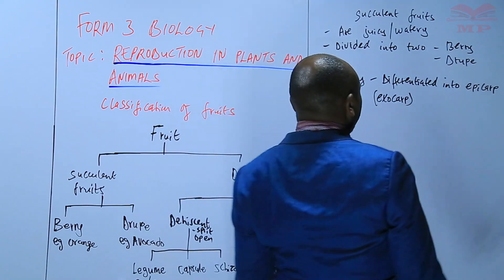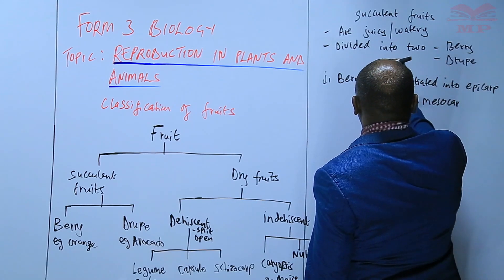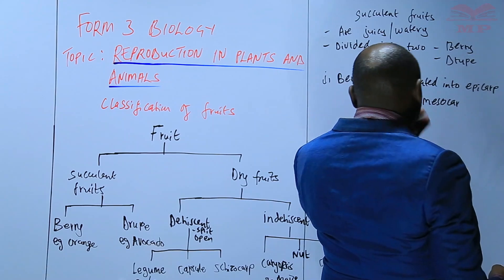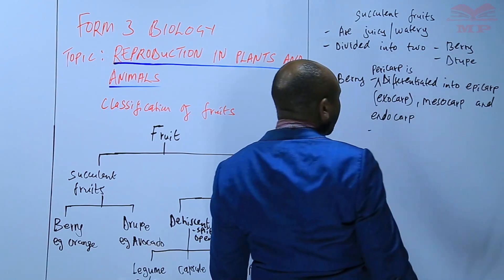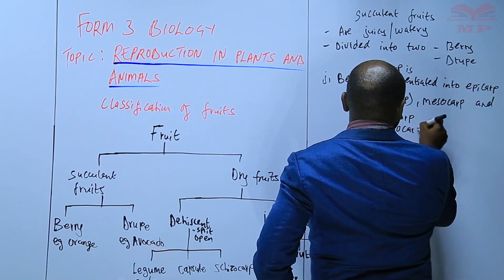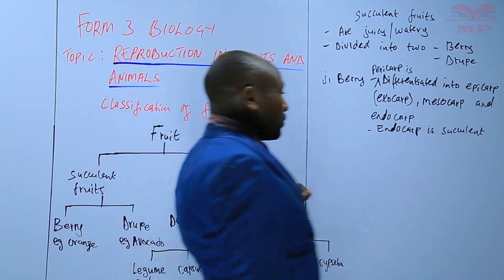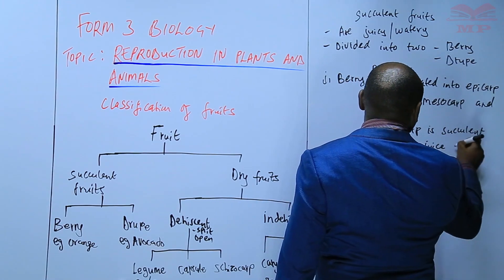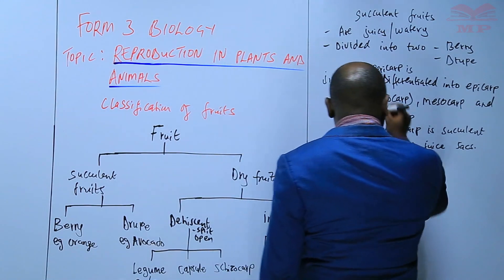The pericarp is differentiated into epicarp, mesocarp, and endocarp. That is one characteristic. The endocarp is succulent — the innermost part is soft, succulent, and contains juice sacs. So we will have a diagram to illustrate a berry. The outer layer is thin — that is what we are calling the epicarp. Then we have the middle layer, which we are calling the mesocarp. And then we have the innermost layer, which is the endocarp. In between, you have the seeds.